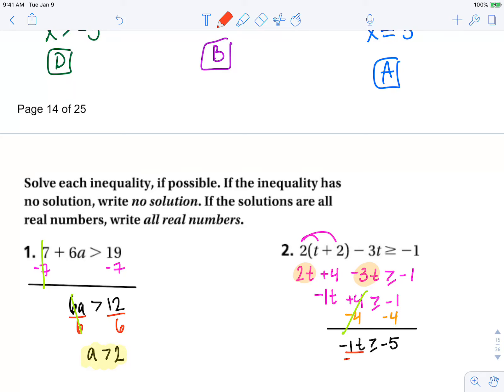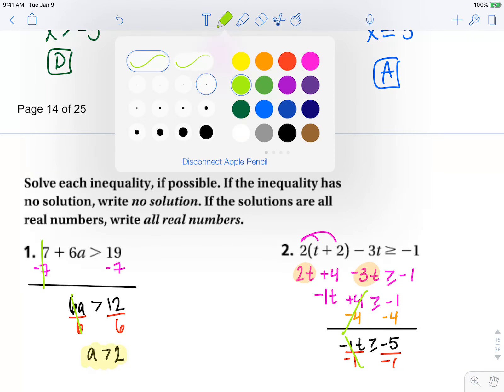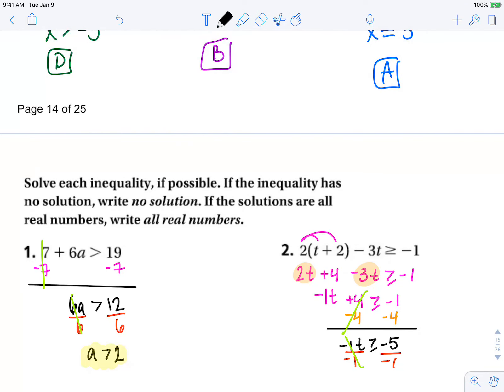To isolate t, we need to divide by that -1, but remember the rule: if we multiply or divide by a negative, we flip our inequality. So t is now less than or equal to 5. Don't forget, when you multiply or divide by a negative, you flip your inequality sign.